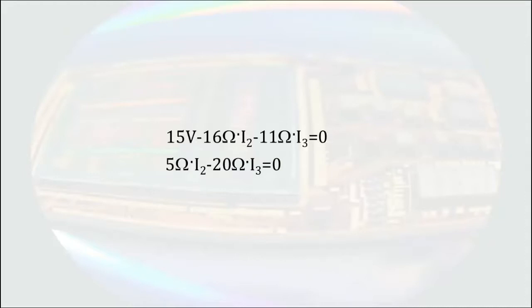We can then divide through the bottom equation by 5 ohms. Moving 4I3 to the other side, we have solved for I2. We can then substitute this into the equation above, resulting in the equation with a single unknown, I3.